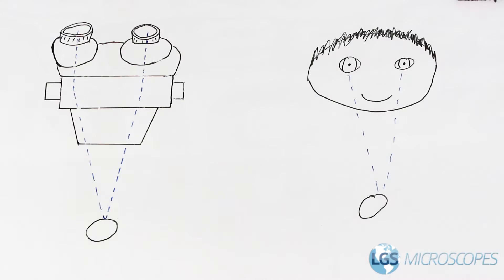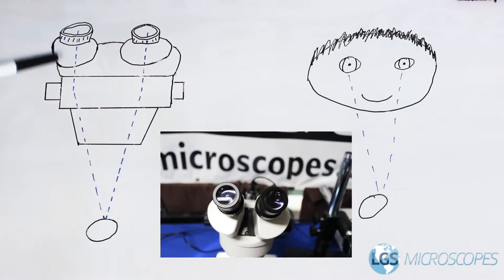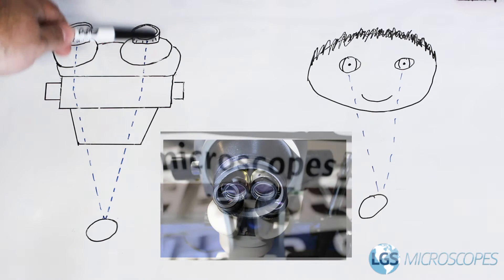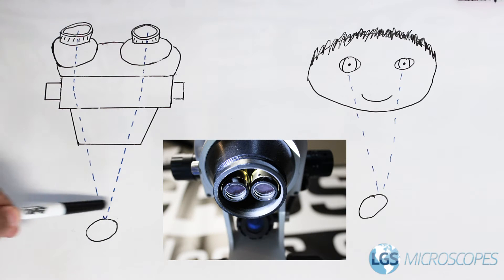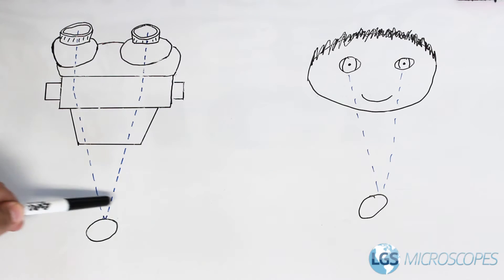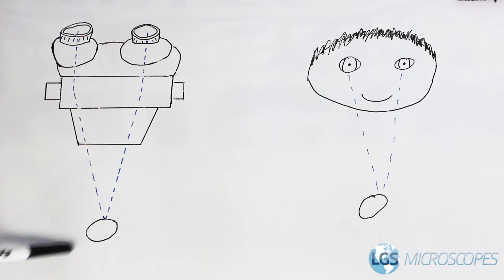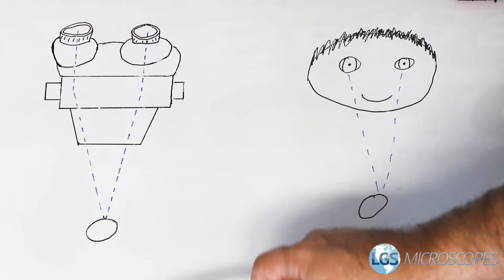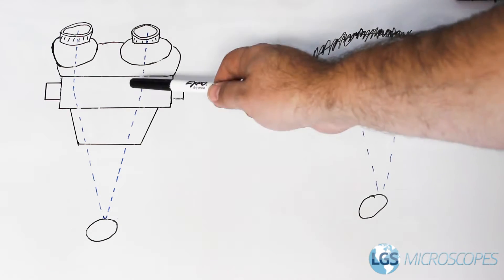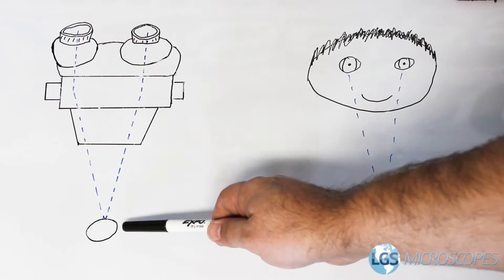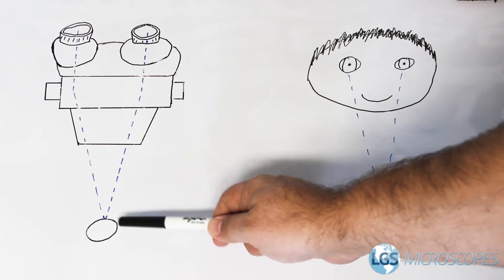The same principle applies with a stereo microscope. You're using two separate light paths that converge on a certain point, and that's where your object needs to be — this is your focal point. The microscope isn't able to change the angle that it's looking at something, so the distance is always fixed.